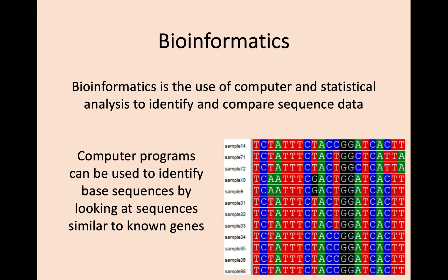We're going to talk about how we can compare the genomes of different species. If you were to write out the entire genome of any species, you would spend weeks writing out lines of C's, G's, A's and T's. Instead, we rely heavily on the use of computers and statistical analysis to compare genomes, to highlight the number of differences between them, and also to identify sequences that are similar, such as shared genes between different organisms. This process is known as bioinformatics, and it's becoming a hugely important area of biology.